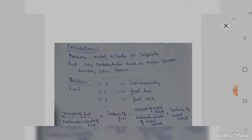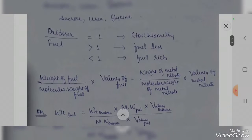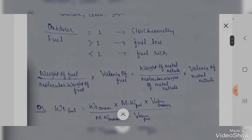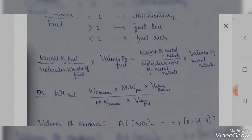To calculate what quantity of metal nitrate should be taken, we use the formula: weight of fuel divided by molecular weight of fuel times valency of fuel equals weight of metal nitrate divided by molecular weight of metal nitrate times valency of metal nitrate. Rearranged: weight of fuel equals weight of oxidizer times molecular weight of fuel times valency of oxidizer, divided by molecular weight of oxidizer times valency of fuel.